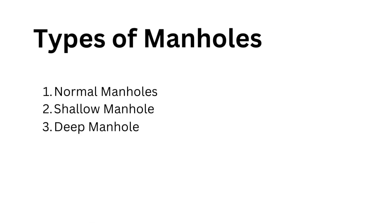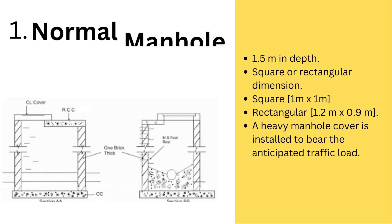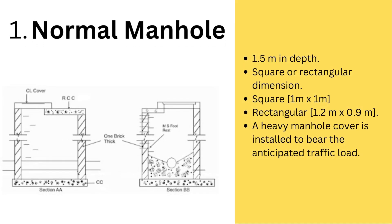Let's start with the basic three types of manholes: normal, shallow, and deep. This classification is based on the depth of manholes selected for the particular application. Normal manholes are generally 1.5 meters in depth and can take a square or rectangular dimension. They are equipped with heavy manhole covers to bear the anticipated traffic load.